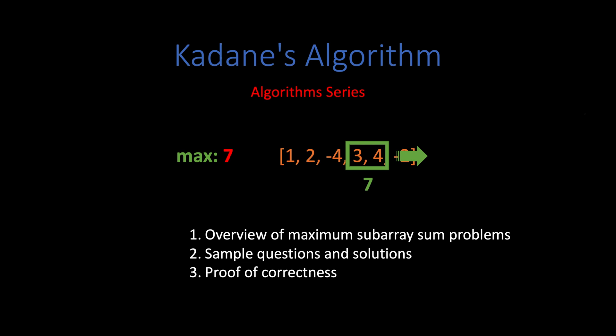A variation of this problem is when you are trying to find the maximum-minimum sum subarray with at least k elements. A slightly modified version of Kadane's algorithm can be used to solve it. Finally, we will prove the correctness of Kadane's algorithm.